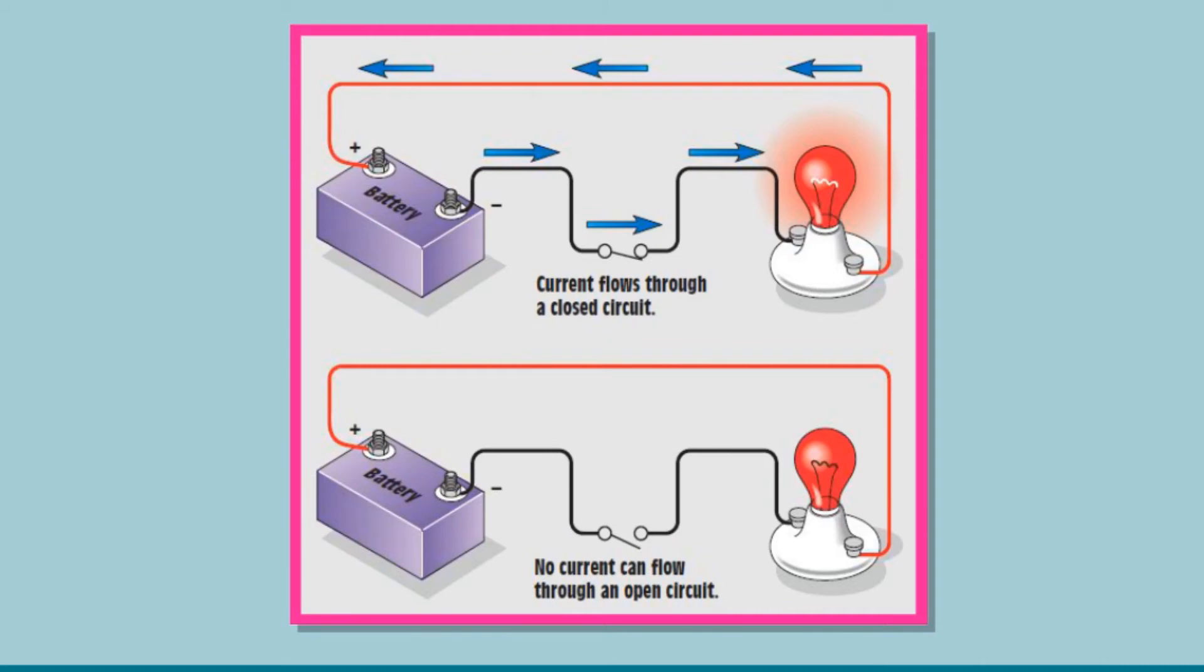If even one of the connections is open, the current will not flow through the circuit. This is called an open circuit. Generally, in a circuit, current is said to flow from the positive terminal to the negative terminal.